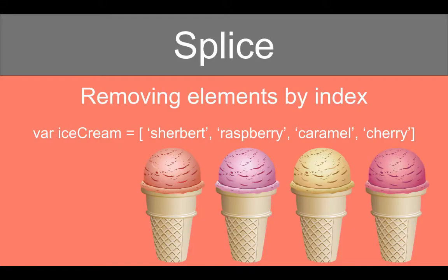The splice method is used to remove or add elements to and from an array. Let's look first at how to use the splice method to remove elements, relying on the index of the array. Here we have an array declared as var iceCream, set equal to an array with four string items: sherbet, raspberry, caramel, and cherry. If we wanted to add an item to the end of the array after cherry, we could use the push method. But it's limited because we can only add to the end with push.